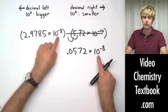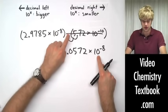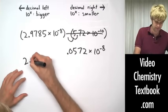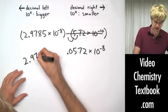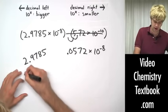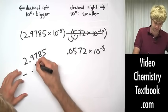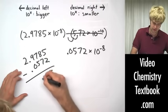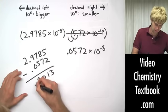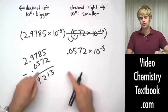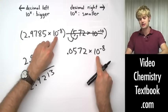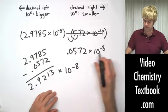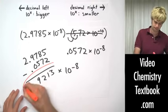Now both of their powers are the same. So since this is a subtraction problem I'll just go ahead and subtract the numbers. So I have 2.9785 minus .0572. Do that math. There's the answer for the first part. And now I just take 10 to the 8th and bring it down here for my final answer. And there we have it. We're done.